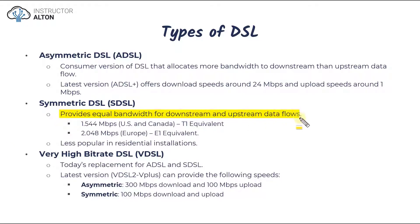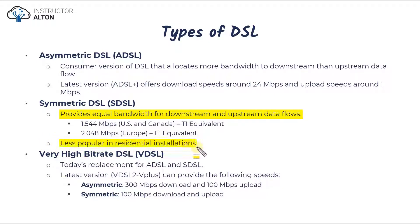With symmetric DSL you get equal bandwidth for both uploading and downloading, but it's very slow and antiquated. It's a T1 equivalent in the United States — 1.544 megabits per second — and an E1 equivalent in Europe at 2 megabits per second. This is more common in a business environment and less common in residential environments, but compared to all the other options available now in 2021 and beyond, this really isn't that popular even for businesses.